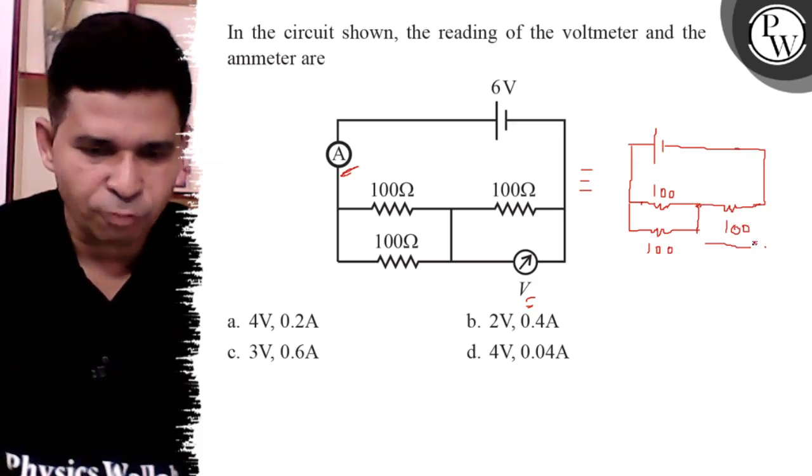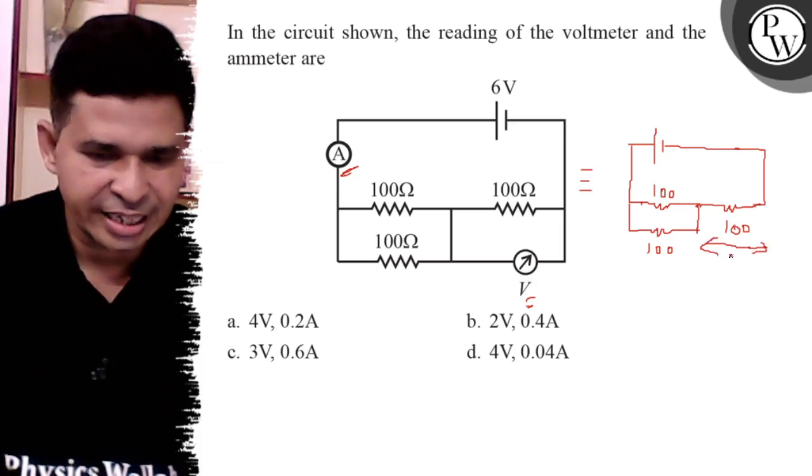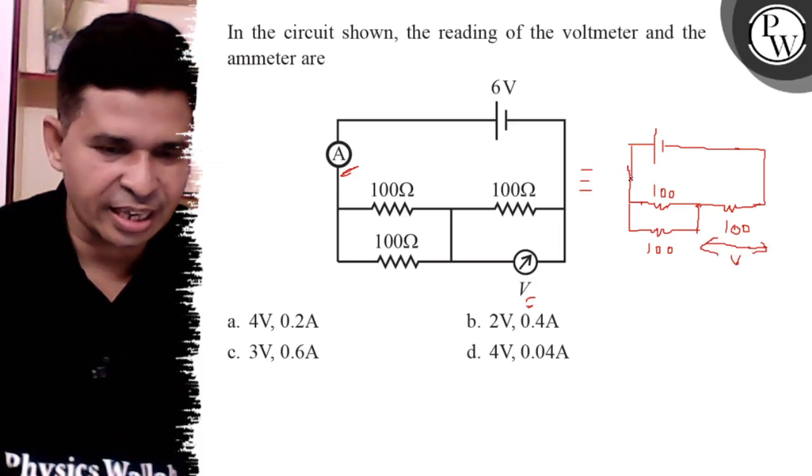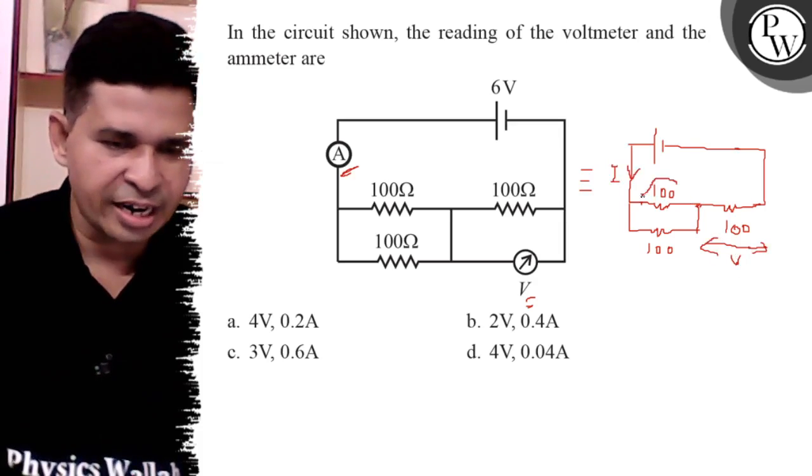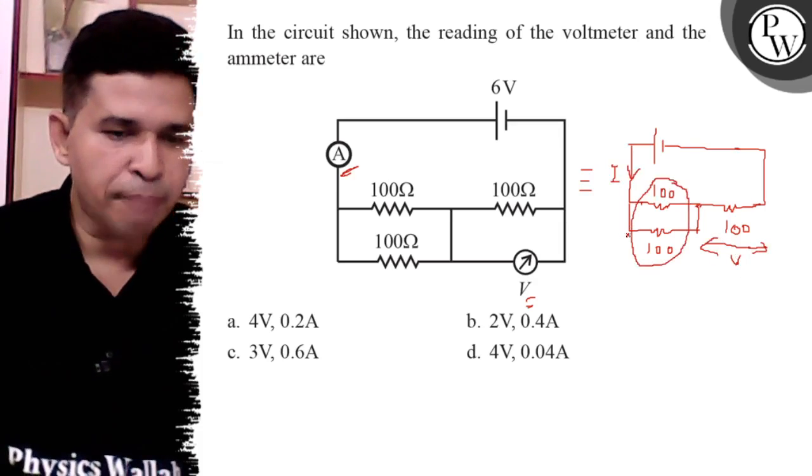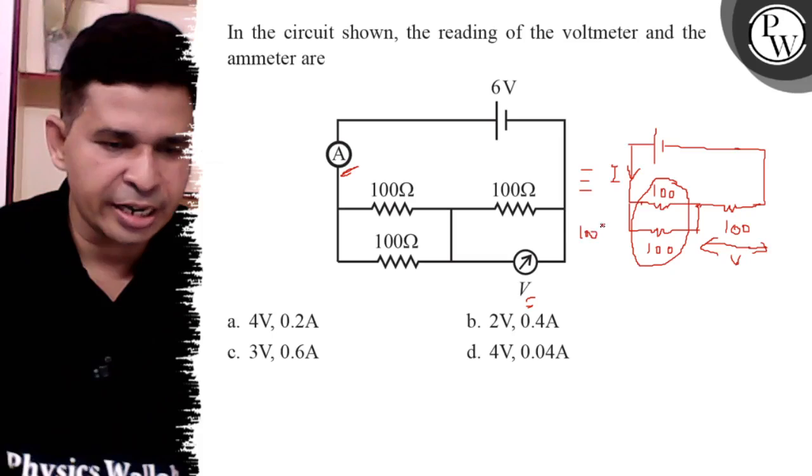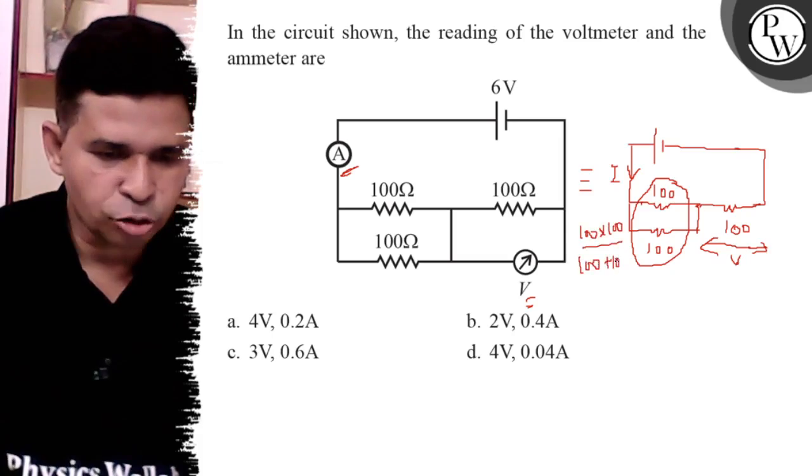Now we have to determine the voltage here, which is the reading of voltmeter, and here we have to determine the current. 100 and 100 ohm are in parallel, so 100 times 100 upon 100 plus 100, so it is 50 ohm.